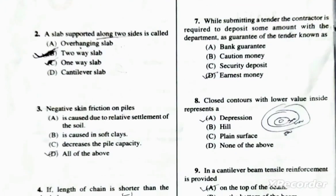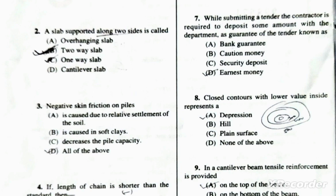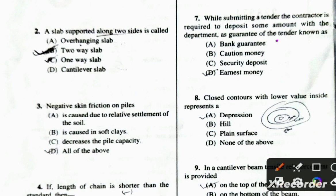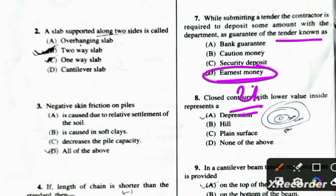Moving to the next question: while submitting a tender, the contractor is required to deposit some amount with the department as a guarantee. This is the definition of earnest money. This amount is normally 2% of the estimated cost, deposited by the contractor as a guarantee of the tender. So earnest money is the correct answer.